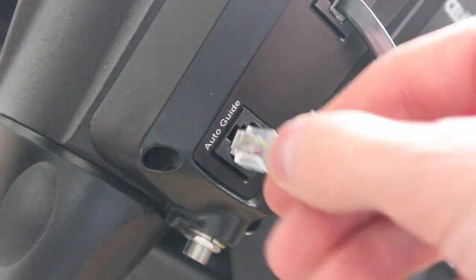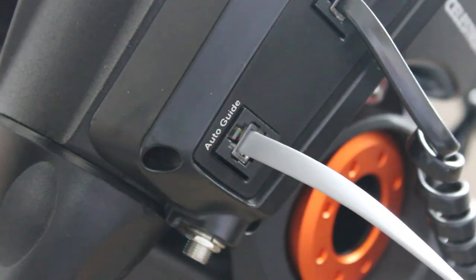The Starshoot Autoguider couldn't be more simple to connect to your computer and get going. All you do is plug in the two cords into the back. One's a USB cord that goes into your computer, the other is an ST4 that goes into your mount, and you're pretty much ready to go. If you don't have updated drivers, you should be able to get them from Orion's website. Open up your software and you're ready to go for guiding.